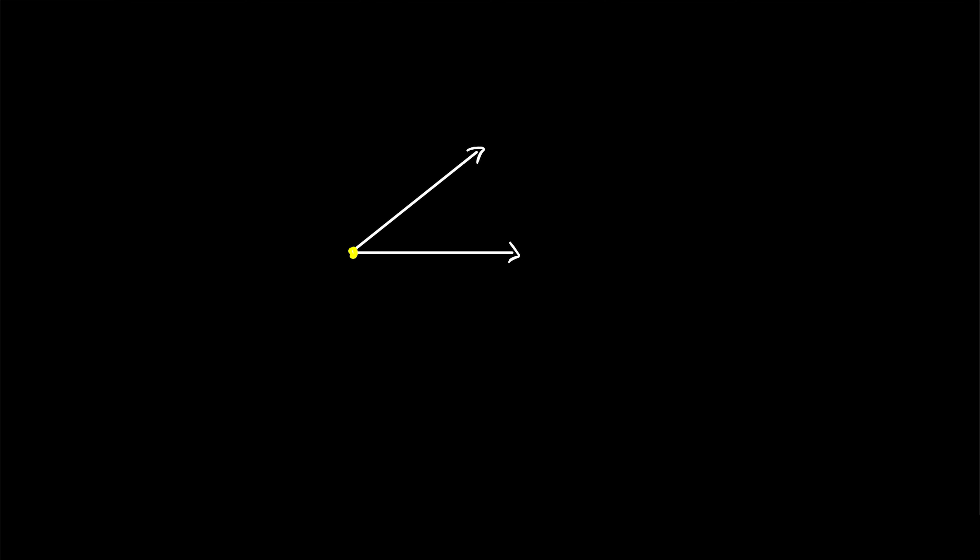Suppose we call the vertex of this angle, where the two rays meet, vertex B. Then one simple way to name this angle is to simply call it angle B, written like this with an angle symbol followed by the name of the vertex of the angle. You might also see the angle symbol sometimes written like that to differentiate it from the less than symbol.